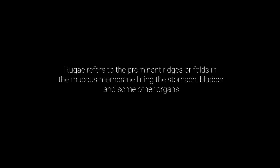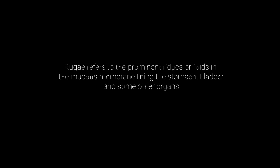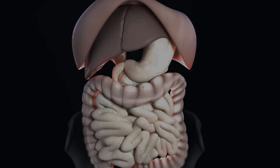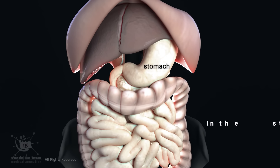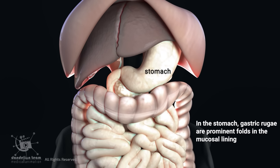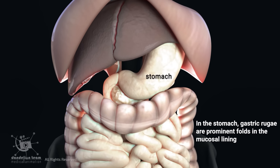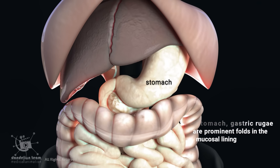Rugae refers to the prominent ridges or folds in the mucous membrane lining the stomach, bladder, and some other organs. In the stomach, gastric rugae are prominent folds in the mucosal lining.